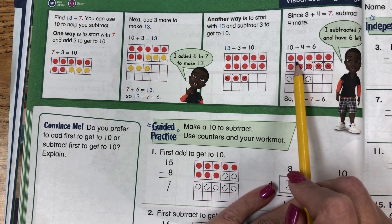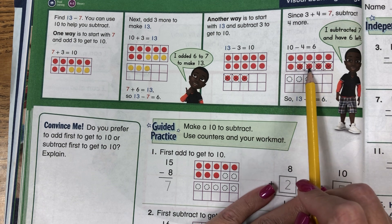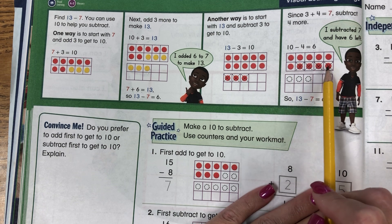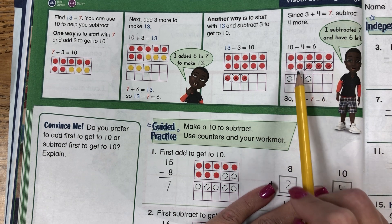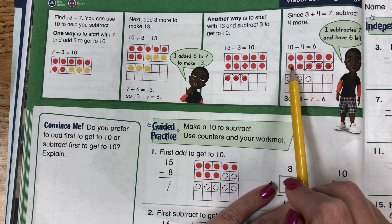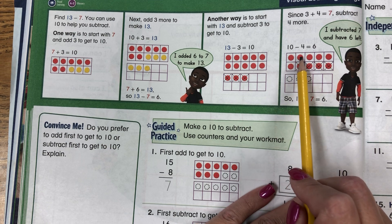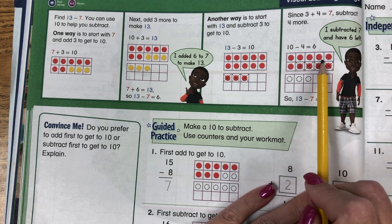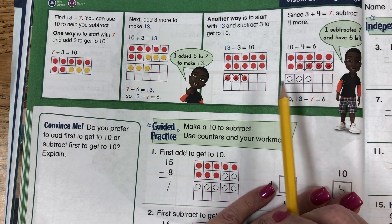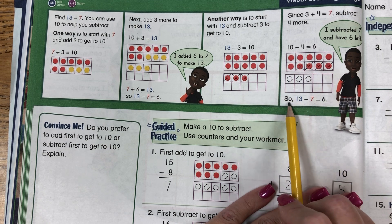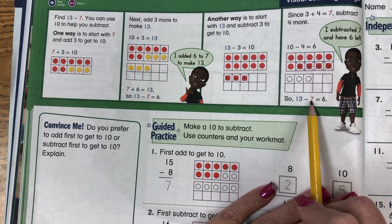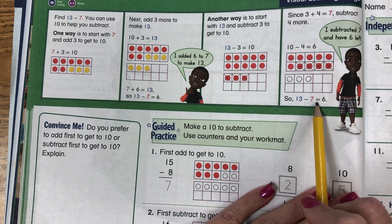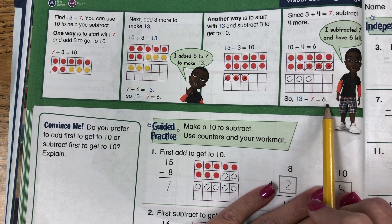There he is — counting: 1, 2, 3, 4, 5, 6, 7. And he says: 6 counters left. So 13 minus 7 equals 6.